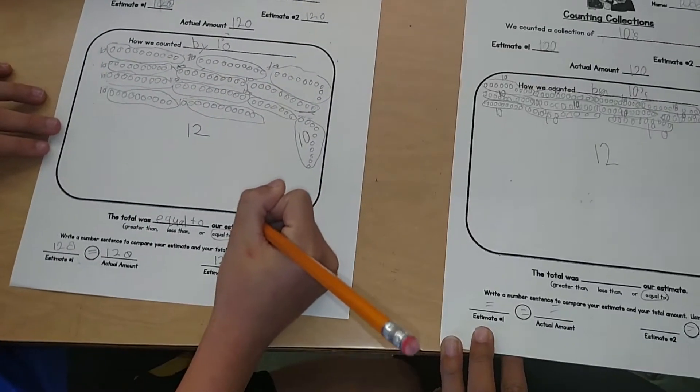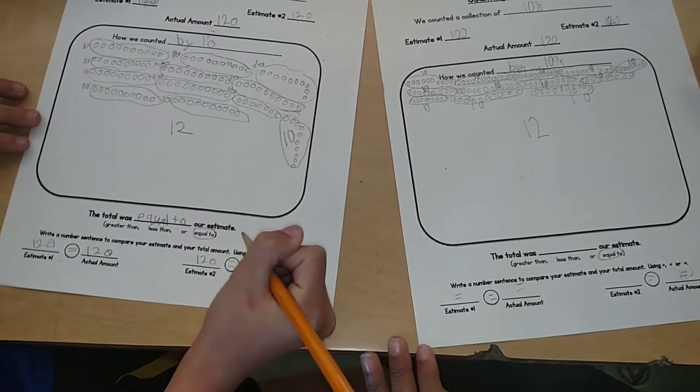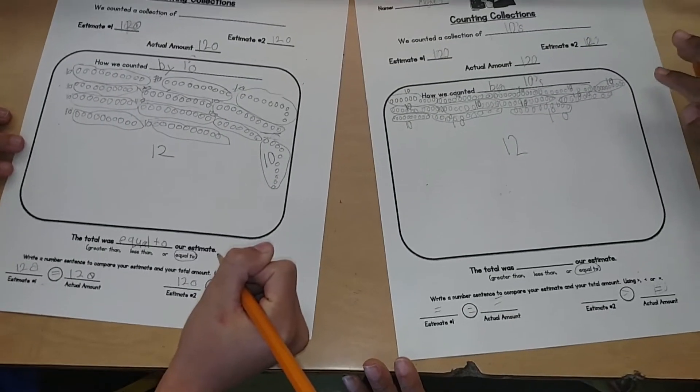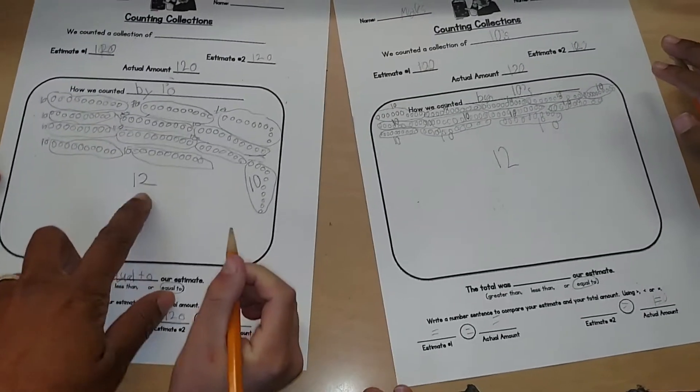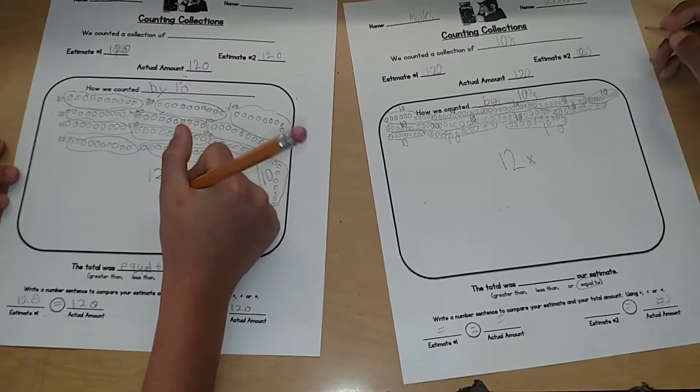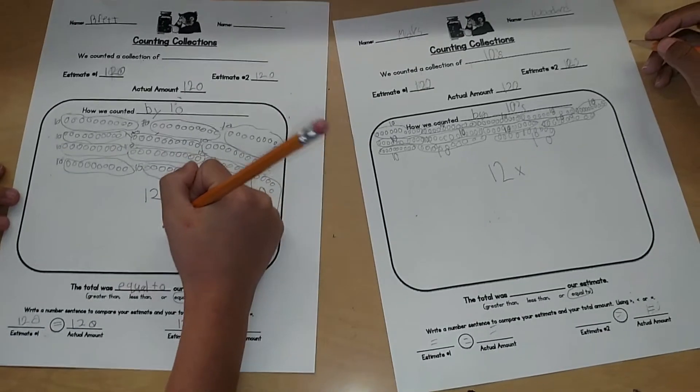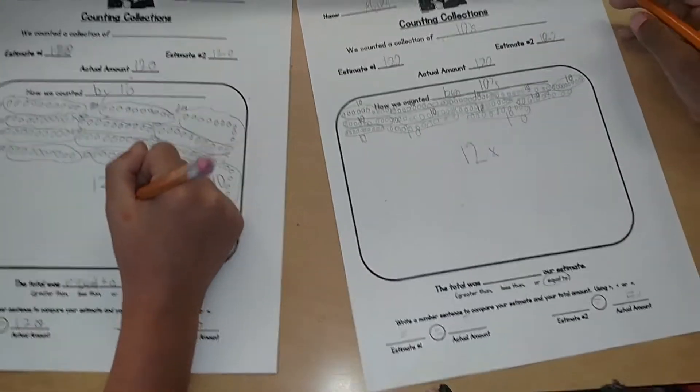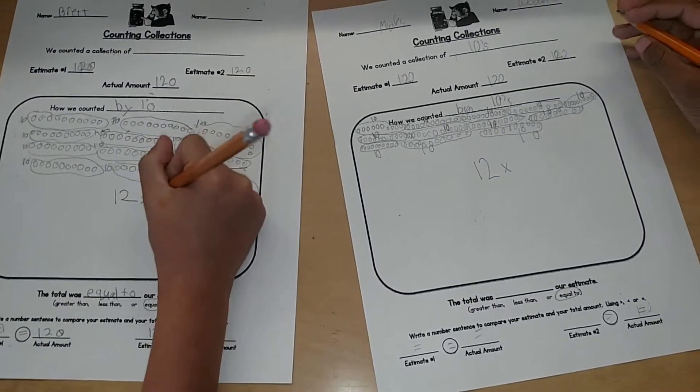And then do you know how a mathematician might represent groups of? No. With an X, like a multiplication sign. So you're going to write 12 and then right next to it you can put an X. And then how many were in your group? 12 groups of how many were in each group? 10. 10. So then you would write a 10.